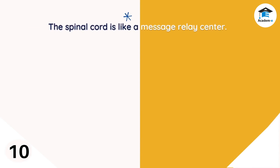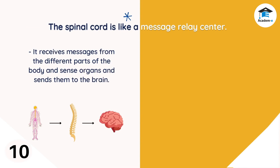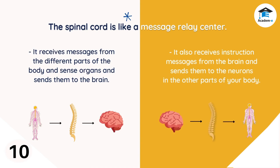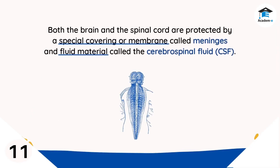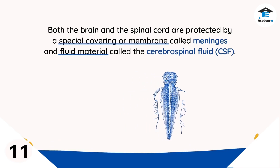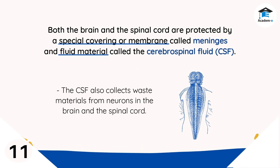The spinal cord is like a message relay center. It receives messages from the different parts of the body and sense organs and sends them to the brain. It also receives instruction messages from the brain and sends them to the neurons in the other parts of your body. Both the brain and the spinal cord are protected by a special membrane called meninges and a fluid called cerebrospinal fluid or CSF. They provide shock-absorbing support to keep the brain and spinal cord steady. The CSF also collects waste materials from neurons, preventing the buildup of toxins that may cause harm.